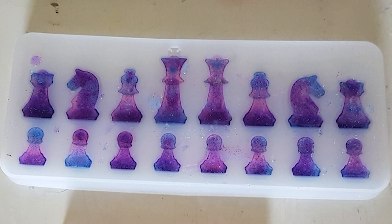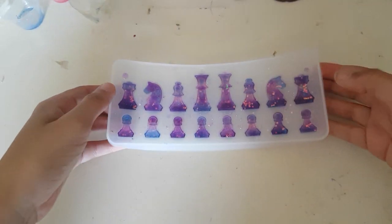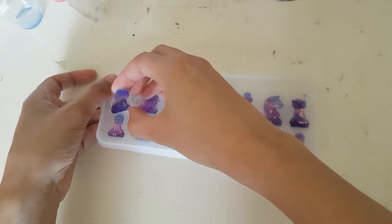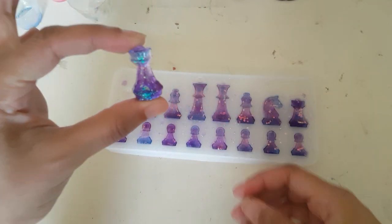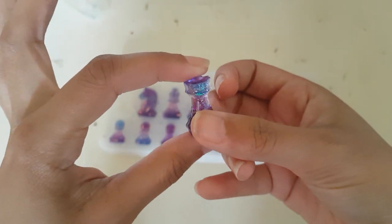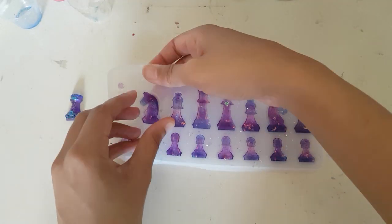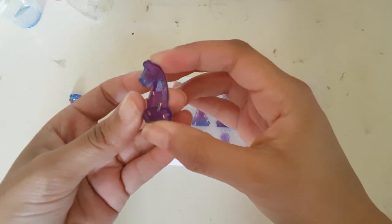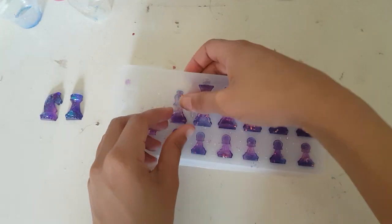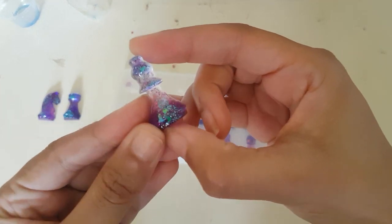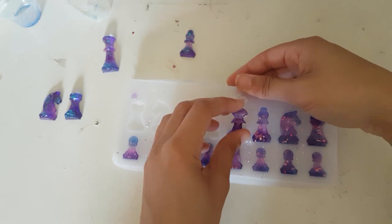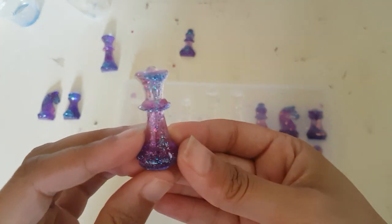24 hours later. Pretty spacey. Repeat the whole process again and glue the two halves together to form a complete set of chess pieces.